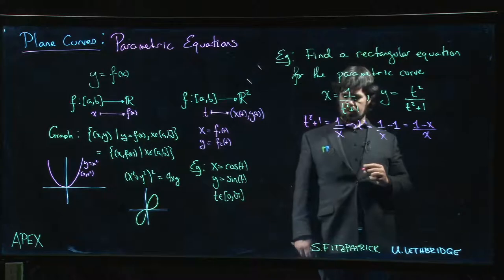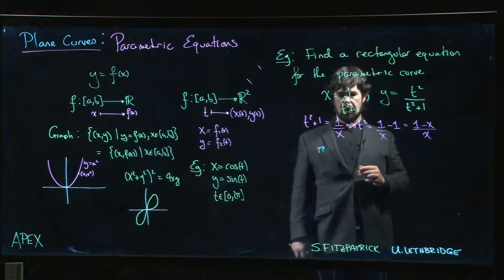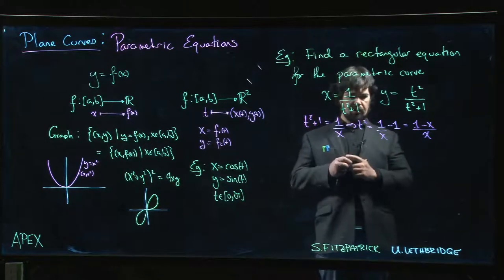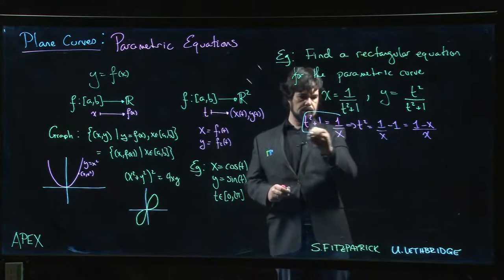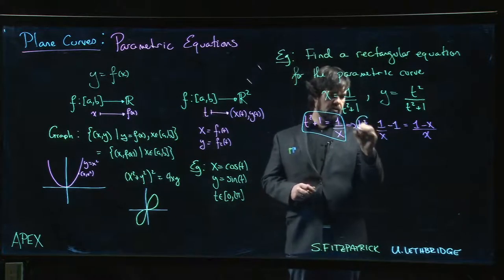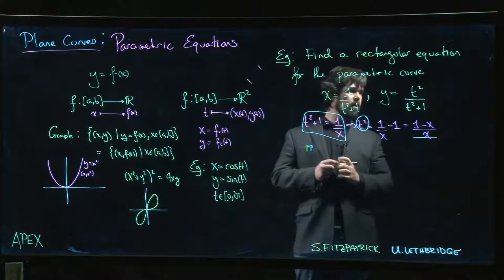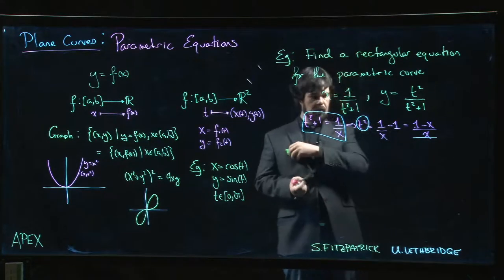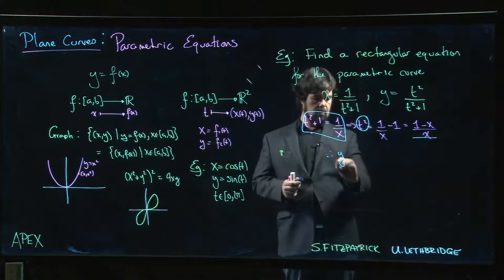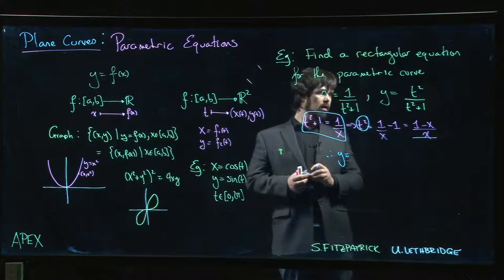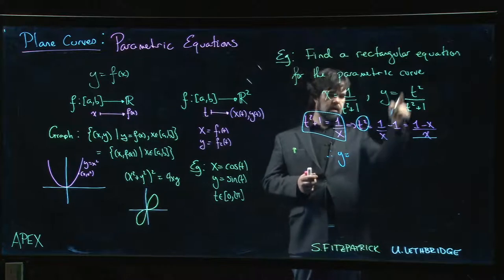Actually this is kind of useful - we have t squared plus 1 here and t squared here. So y is now equal to what? y is equal to t squared, so y is 1 minus x over x.